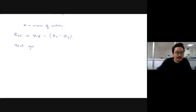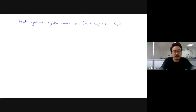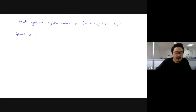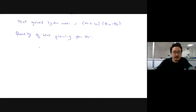The heat gained by the water is mass times (theta 4 minus theta 3). If you remember, s is the specific heat capacity and w was the water equivalent. The quantity of heat flowing per second for the water will be q equal to (m plus w) times (theta 4 minus theta 3) divided by time t.